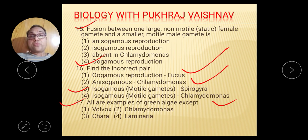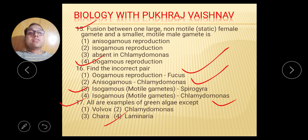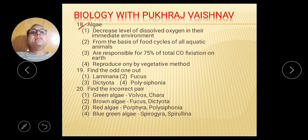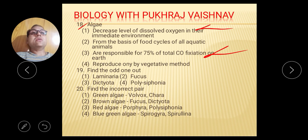Question number 17: All are examples of green algae except — Volvox is green algae, Chara is green algae, Chlamydomonas is green algae, Laminaria is brown algae. So the right answer is 4. Question 18: Algae — they do not decrease dissolved oxygen in their environment. They form the basis of the food cycle. The right answer is option 2. They do not reproduce only by vegetative method. The right answer is second.